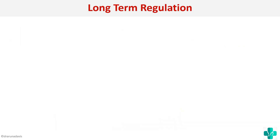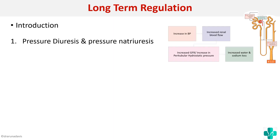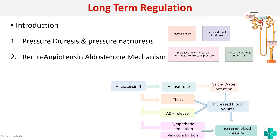In a nutshell, when answering a question on long-term regulation you should start with an introduction covering what BP is and the three mechanisms of regulation — short-term, intermediate, and long-term. Then explain pressure diuresis and pressure natriuresis, as well as the renin-angiotensin-aldosterone mechanism. As a clinical application, you can also write the various antihypertensive drugs and their mechanisms.